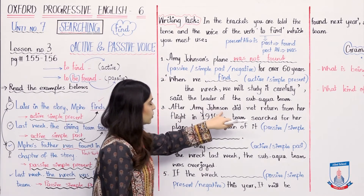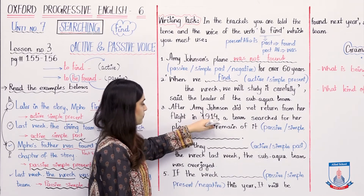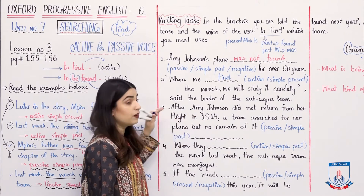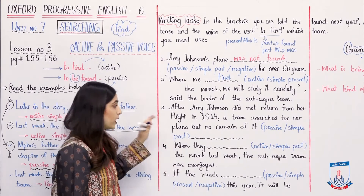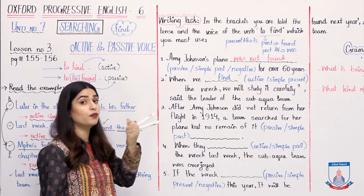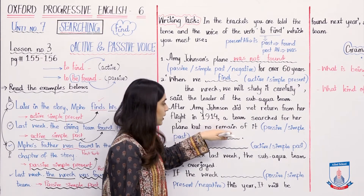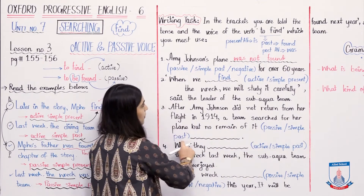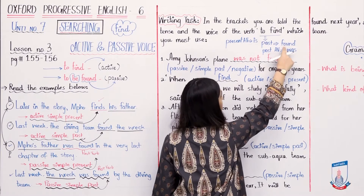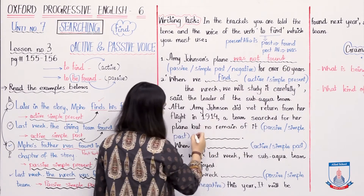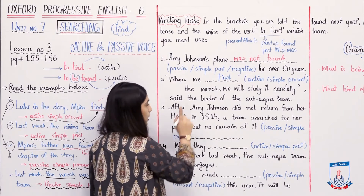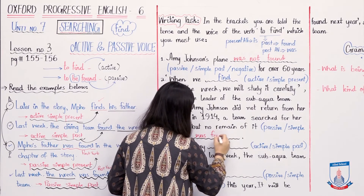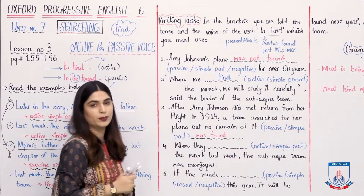Number three: After Amy Johnson did not return from her flight in 1941, the team searched for her plane, but no remain of it was found. We need passive simple past — the auxiliary verb for simple past is 'was.' There is no negative mentioned, so we write: 'no remain of it was found.' Sentence complete. Understood?